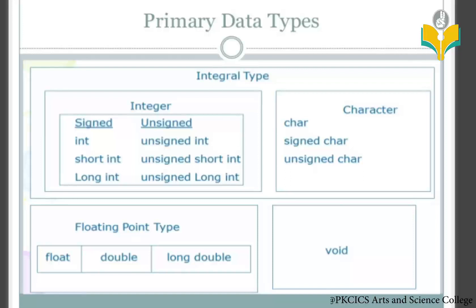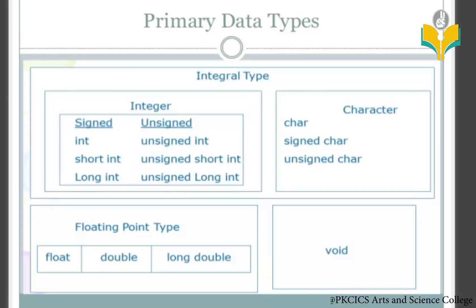For example, 1.23 or 0.123 — values with a decimal point, fractions, are floating types. The floating point types include float, long, and double. The last one is void, which we will discuss separately.